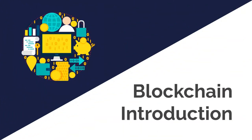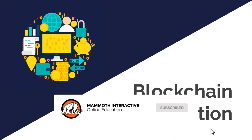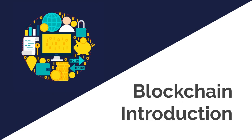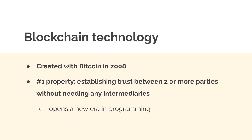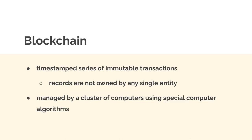Hello everyone and welcome back to our course. In this lecture we're going to learn what is a blockchain, and later on we'll talk about the Cardano blockchain specifically and how to build smart contracts. Blockchain technology was created with Bitcoin in 2008. The number one priority property of blockchain is to establish trust between two or more parties without needing any intermediaries or middlemen. A blockchain is a timestamped series of immutable transactions — timestamps or dates and times that cannot be changed.